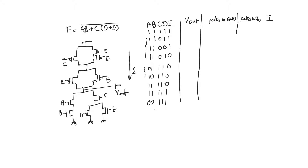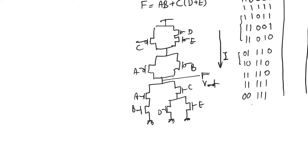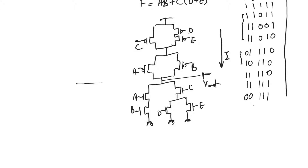Let's take the all-ones input case first. When we have all ones, the entire pull-up network is going to be cut off and the pull-down network is going to be entirely on. We have a rather complicated set of transistors in the pull-down network which are on — A and B are in series with each other and then in parallel with something else. But we can reduce all of these transistors to a single transistor, because they all have the same inputs to their gates, using parallel and series reductions. We can reduce these transistors into a single NMOS transistor whose K can be calculated.